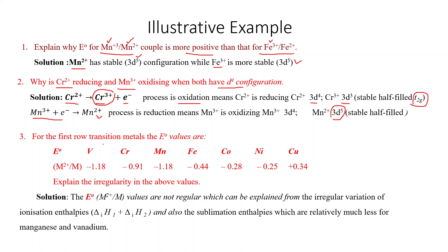For the first row transition metals, the E° values are not regular. The reason is the irregular variation of ionization enthalpies of the first and second ionization, and also the sublimation enthalpies, which are relatively much less for manganese and vanadium.